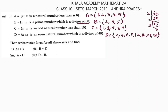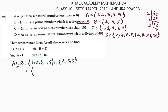Now we need to find A union B. Set A is {1, 2, 3, 4, 5} and set B is {2, 3, 5}. For the union operation, we write all elements of A and B but do not repeat any. So A union B is {1, 2, 3, 4, 5}, which is nothing but set A itself.